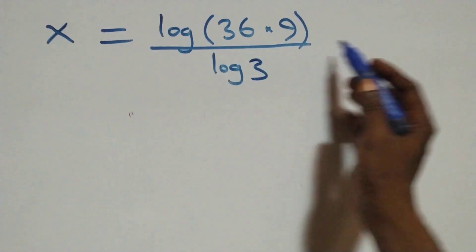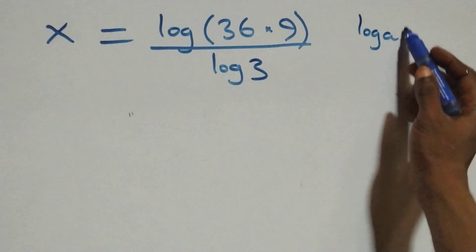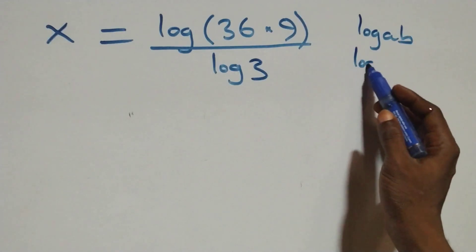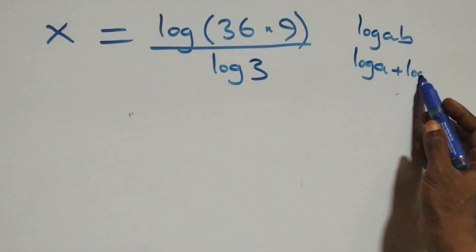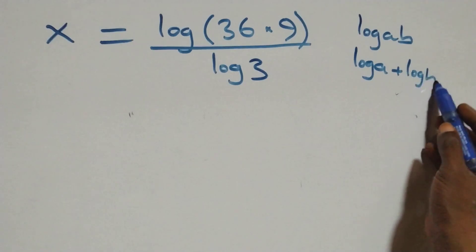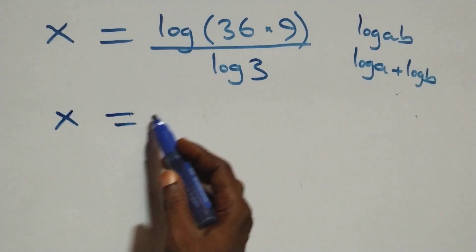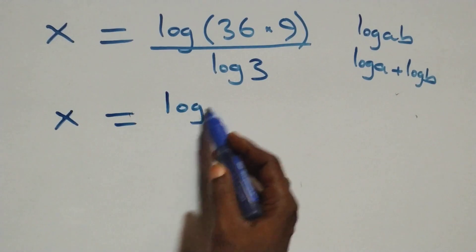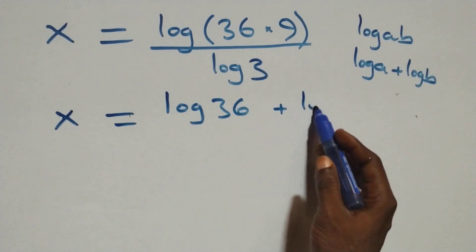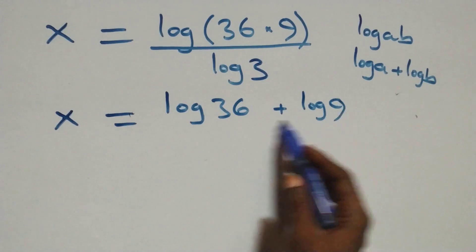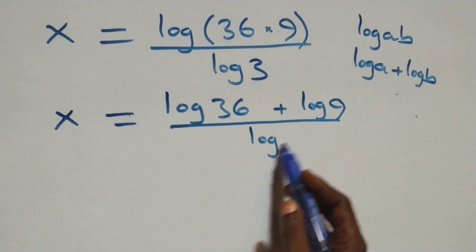This follows from the law of logarithms: log(a times b) is the same as log a plus log b. So here we have x equals log 36 plus log 9, all over log 3.